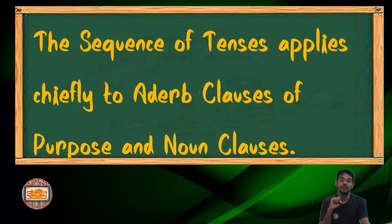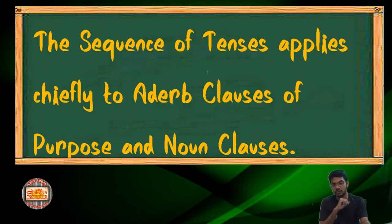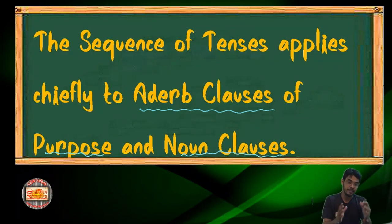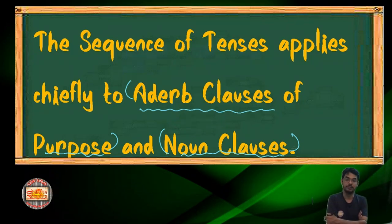We are going to learn the first set of rules. We have already discussed about the principal clause and the subordinate clause, and that subordinate clauses follow the rules of the tense of the principal clause — but not for all subordinate clauses. Most of the time, it's applicable to adverb clauses of purpose and noun clauses. Adverb clauses of purpose, not all adverb clauses, and also noun clauses — for them, these rules are applied very frequently.